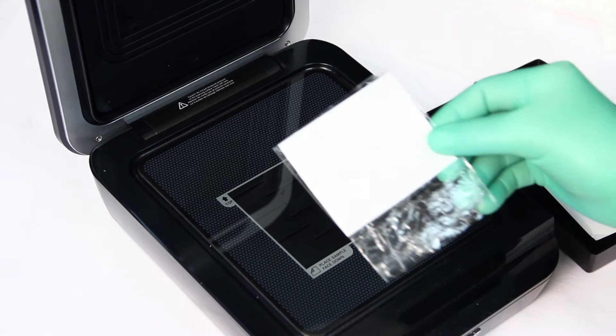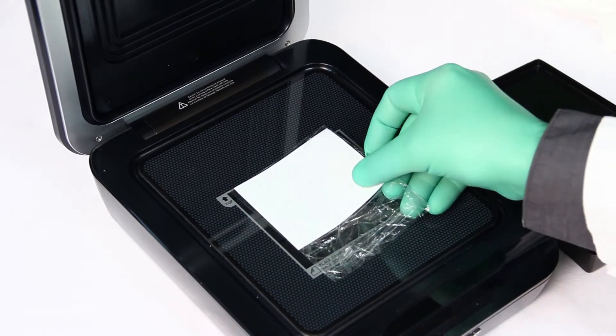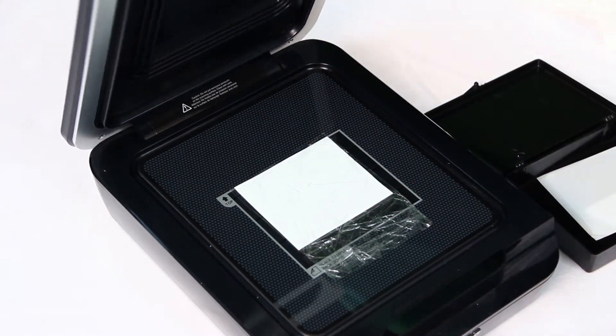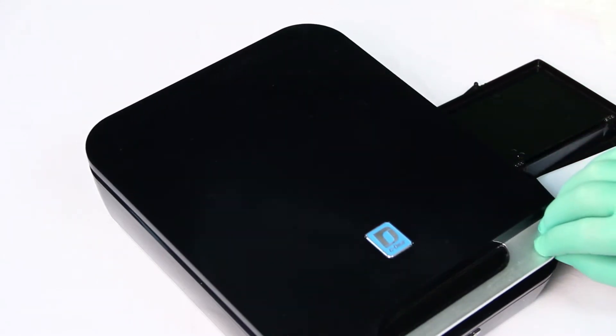If you prefer, you can wrap your blot in plastic wrap or place it in a plastic sleeve prior to imaging. The plastic wrap will adhere to the glass surface of the scanner and provide a smooth flat surface for imaging.